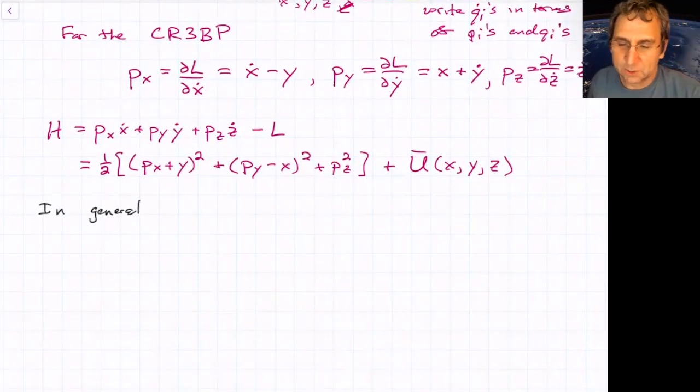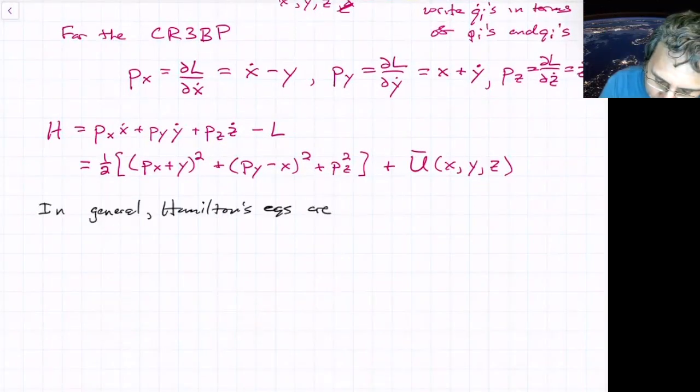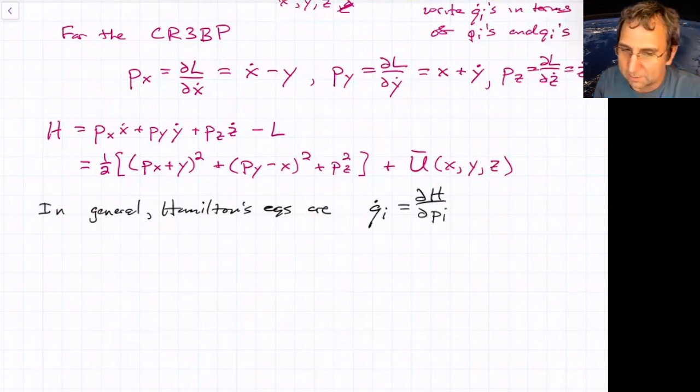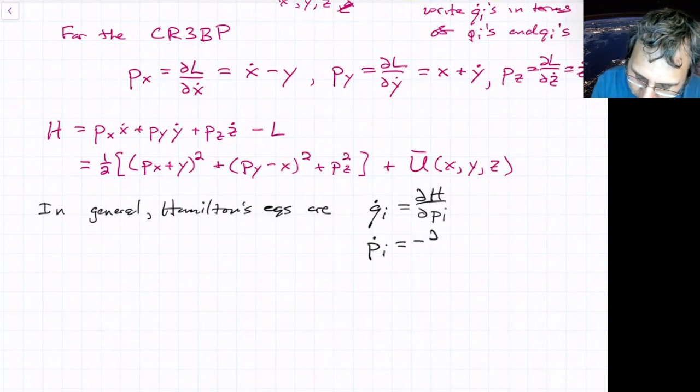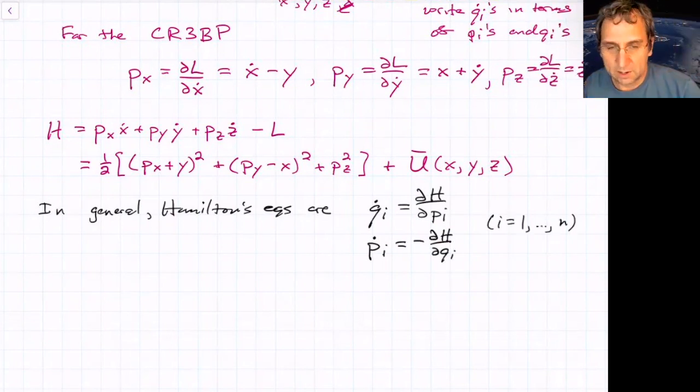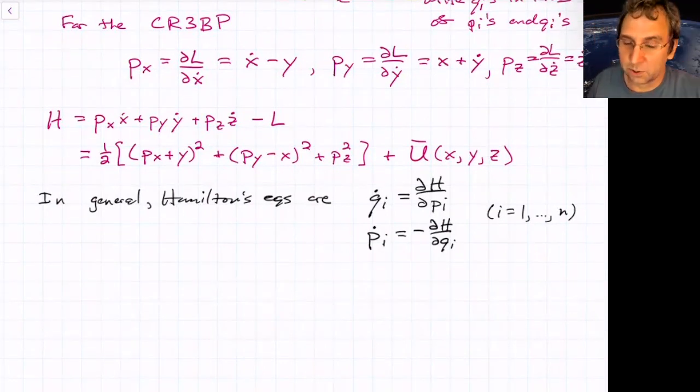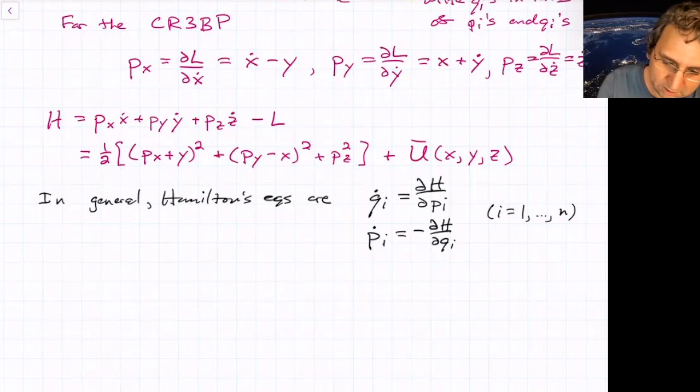And then Hamilton's equations in general, they are qi dot equals partial h partial pi. And then the way that that momentum evolves is pi dot equals negative partial h partial qi. And so we have this for each pair. So there's actually two n first order ODE's that result from this into first order ODE's. The Hamilton's equations automatically give you first order ODE's. So that's nice.